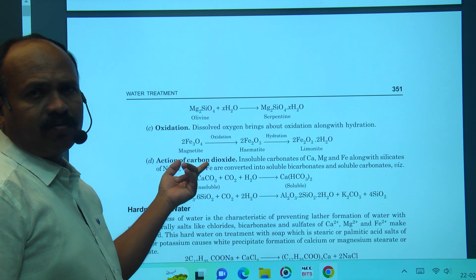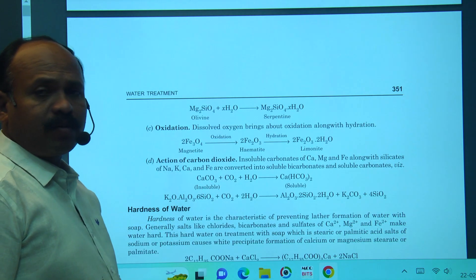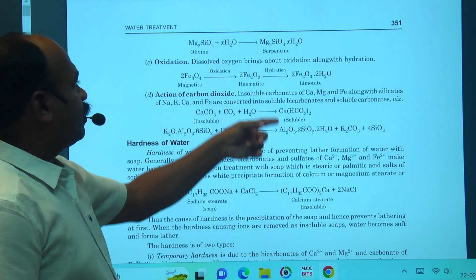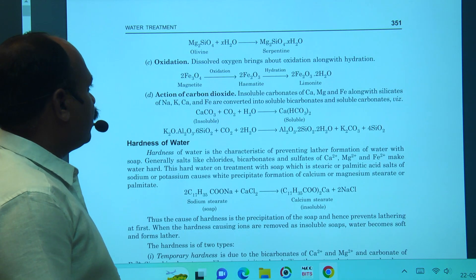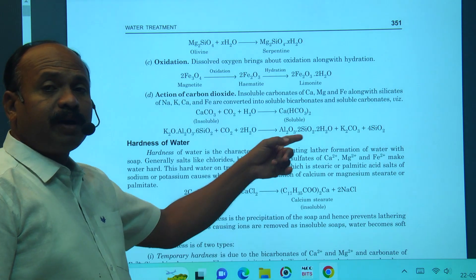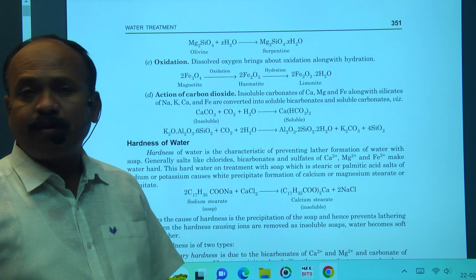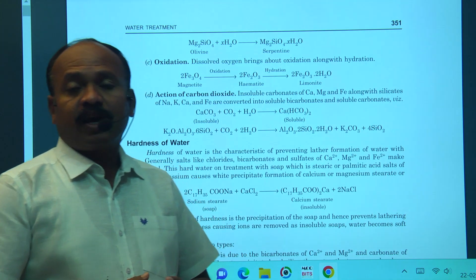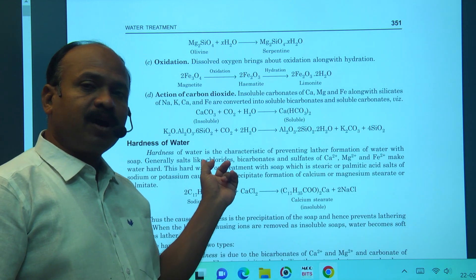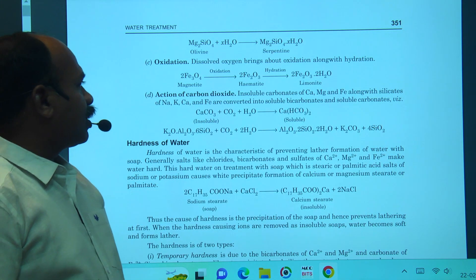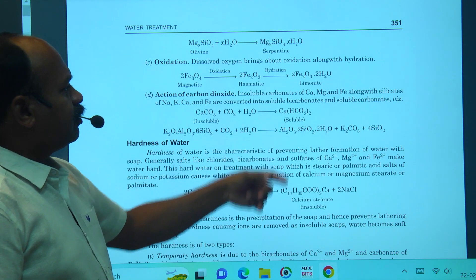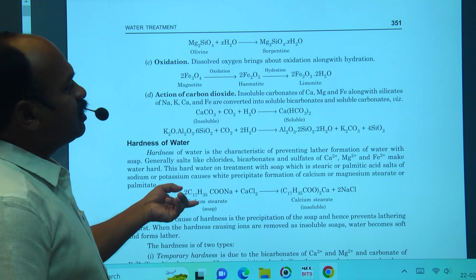Magnetite (Fe3O4) and hematite (Fe2O3) combine with water to form limonite. Action of carbon dioxide: calcium carbonate reacts with carbon dioxide and water to form calcium bicarbonate. Similarly, magnesium carbonate reacts to form magnesium bicarbonate. Potassium aluminium silicate with carbon dioxide and water yields aluminium oxide, silicon dioxide, carbonate and silicon dioxide.